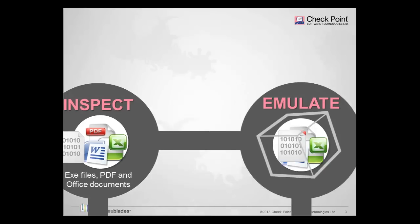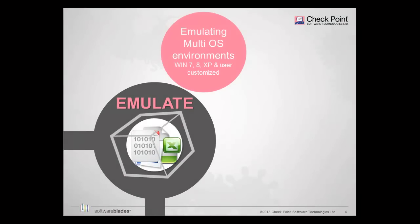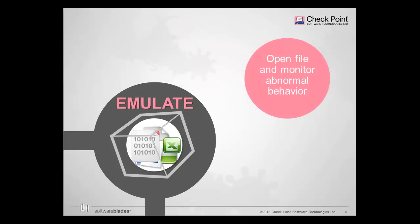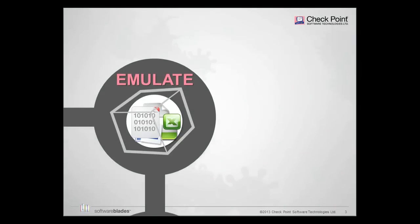In the emulation step, the file is opened and monitored in multiple Windows OS environments and Microsoft Office versions. This means that older systems that still rely on XP will be protected as well as more modern OS versions. Changes to the file system or registry, or unusual activity in network connections or system processes, tell us the file is malicious.